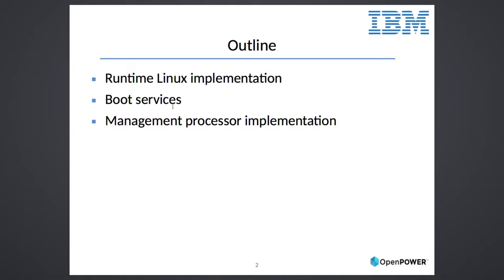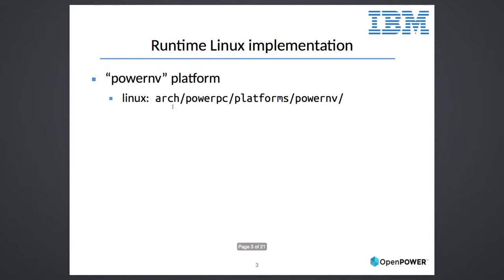Of course everything here is open source. We have everything in our tree, in the standard Linux tree, using the standard open Linux PowerPC platform support. So the open power code lives in a platform directory. Under the PowerPC tree, we have a set of different platforms. We can build them into what we call a multi-platform kernel, so a single build can boot on an open power machine, an IBM power machine, or a G5.